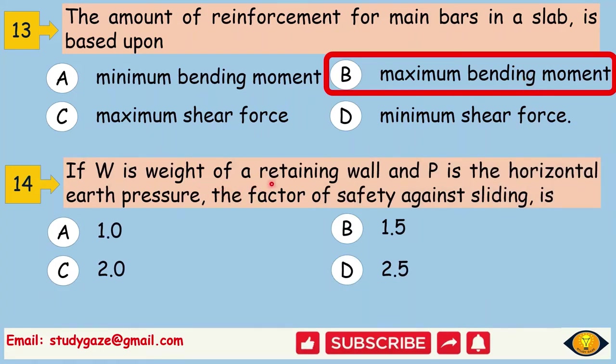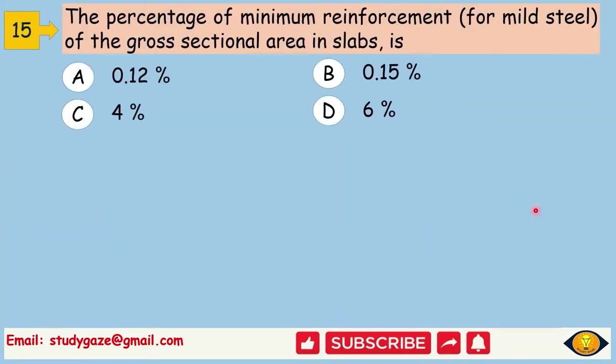If W is weight of a retaining wall and P is the horizontal earth pressure, the factor of safety against sliding is. The answer is 1.5. The percentage of minimum reinforcement for mild steel of the gross sectional area in slabs is. For mild steel it is 0.15% and for HYSD bar, it will be 0.12%.